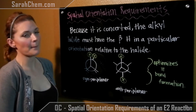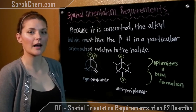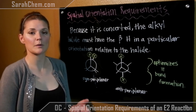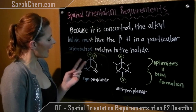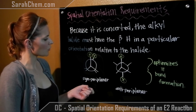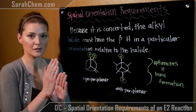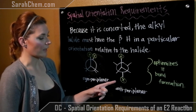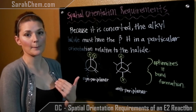Because this is all happening in a concerted step, and we need to form a pi bond, the beta carbon's hydrogen that is being lost and the halide group that is leaving have to be either in a syn periplanar orientation to one another — meaning right behind one another in an eclipsed conformation — or they have to be anti to one another, in a staggered conformation, exact opposites.